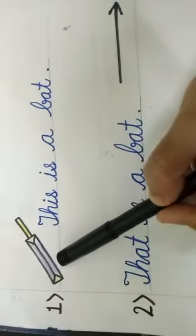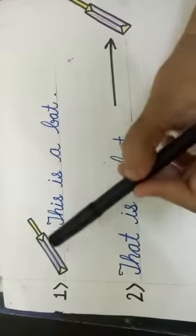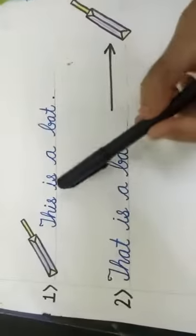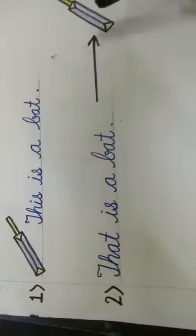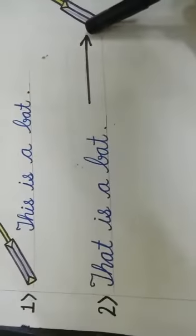For example, for a single bat which is close to you — hum uske liye kya use karenge? This. Ek bat jo hamare paas hai, hum uske liye 'this' use karenge: This is a bat. Yeh ek bat hai. And for a single bat which is far in distance — hum uske liye kya use karenge? That. That is a bat.